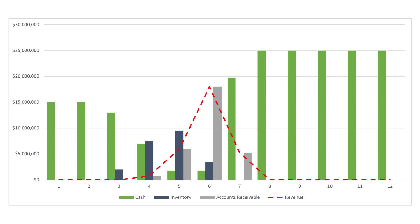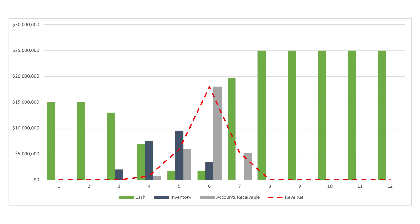Had sales spiked more abruptly, the $15 million cash balance that the company started the season with would have been insufficient. It's a little counterintuitive, but strong growth can bankrupt a company with positive net working capital.